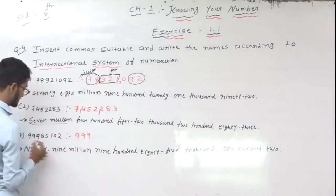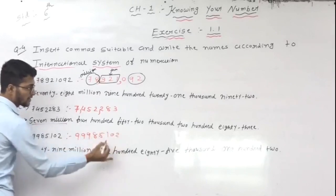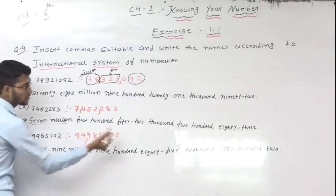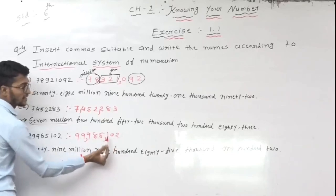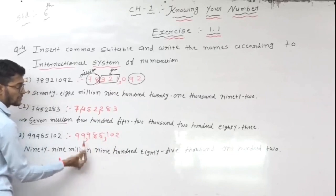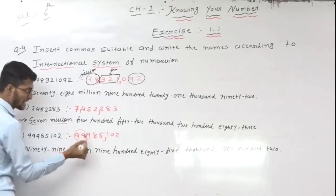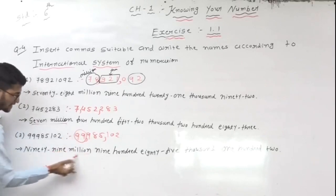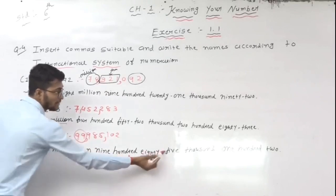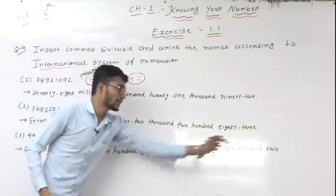Last number: 30985102. Apply international system: 3 digits, comma, 3 digits, comma, 3 digits. Place values: ones, tens, hundreds, thousands, ten thousands, hundred thousands, million, ten million. This gives: nine hundred eighty-five thousand and one hundred and two. So: thirty million, nine hundred eighty-five thousand, one hundred and two.